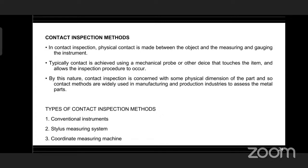The coordinate measuring machine (CMM) has a contact probe that can be positioned in 3D space relative to the surface of a work part. The x, y, and z coordinates of the probe can be accurately and precisely recorded to obtain dimensional data concerning the part geometry. Different types of CMM include cantilever, moving bridge, and fixed bridge configurations.